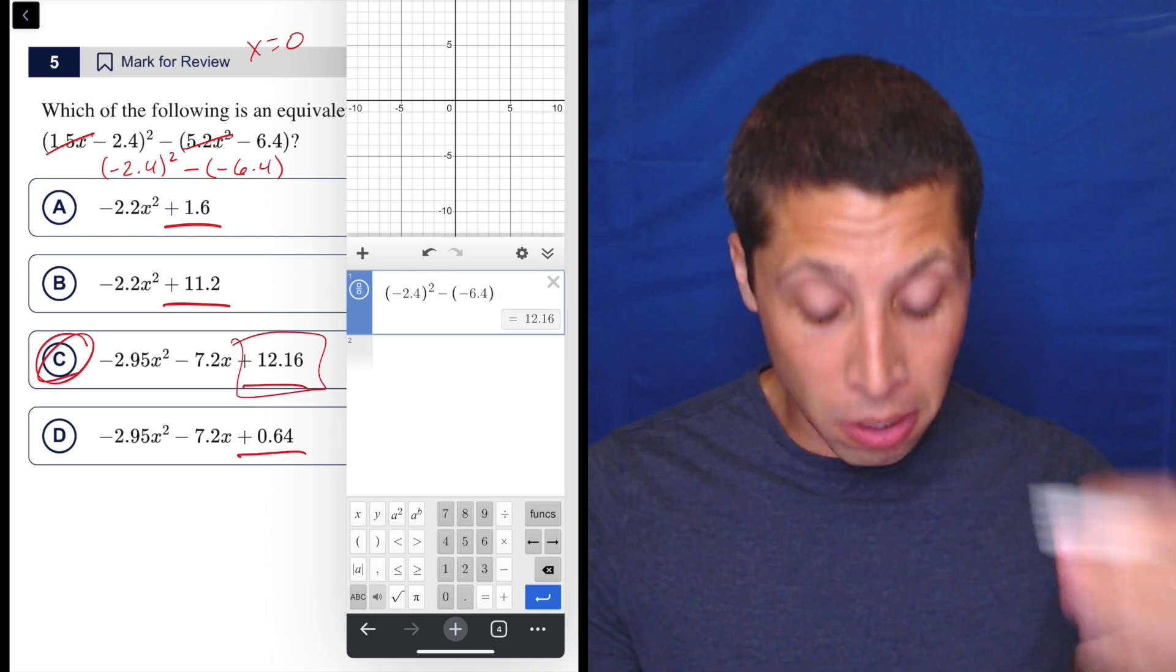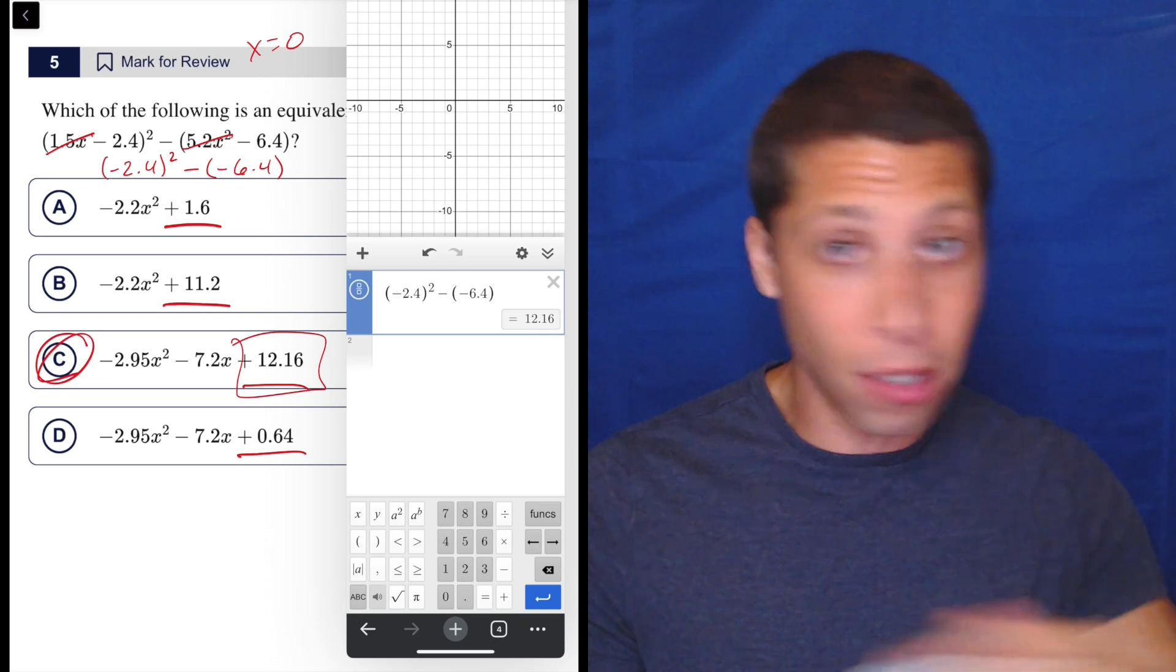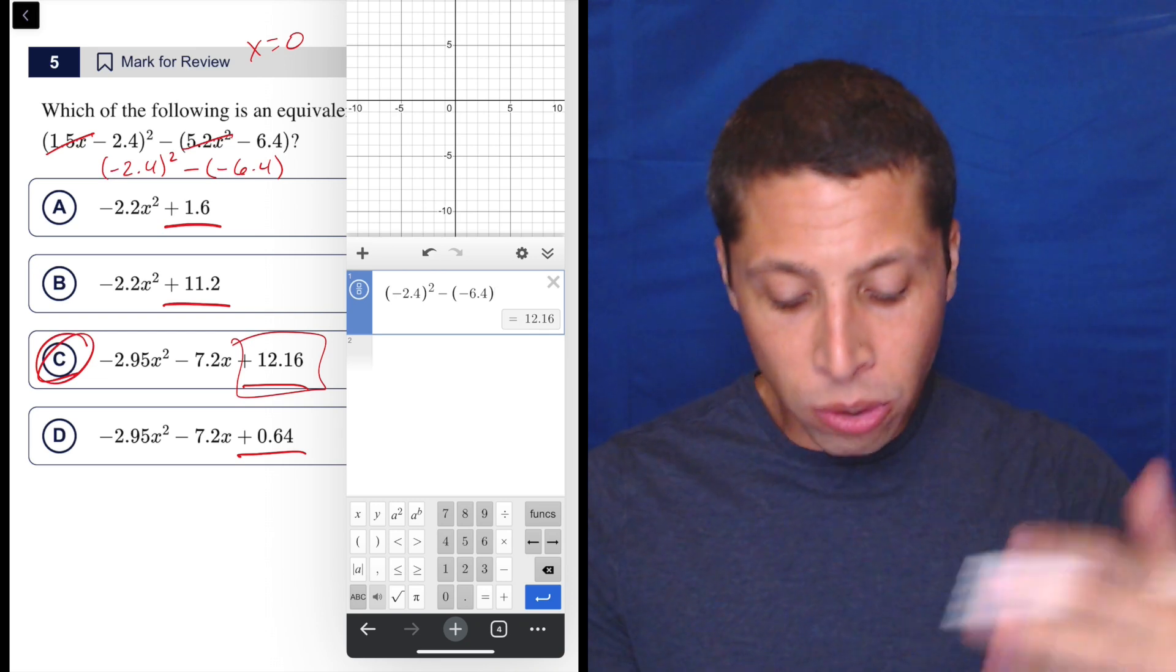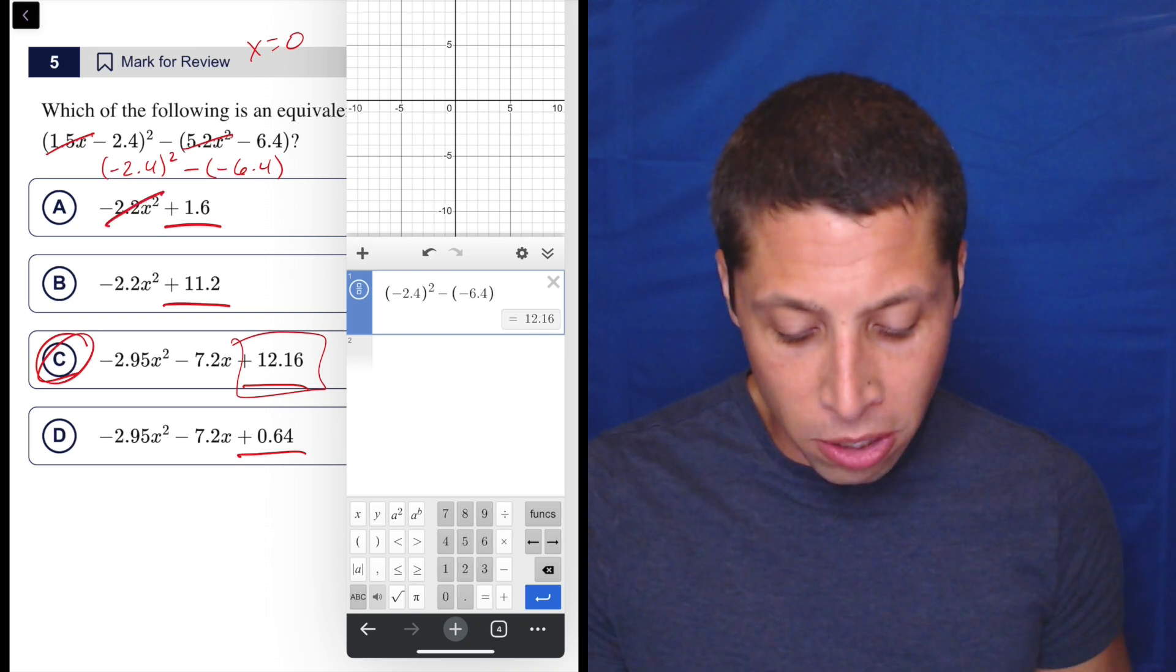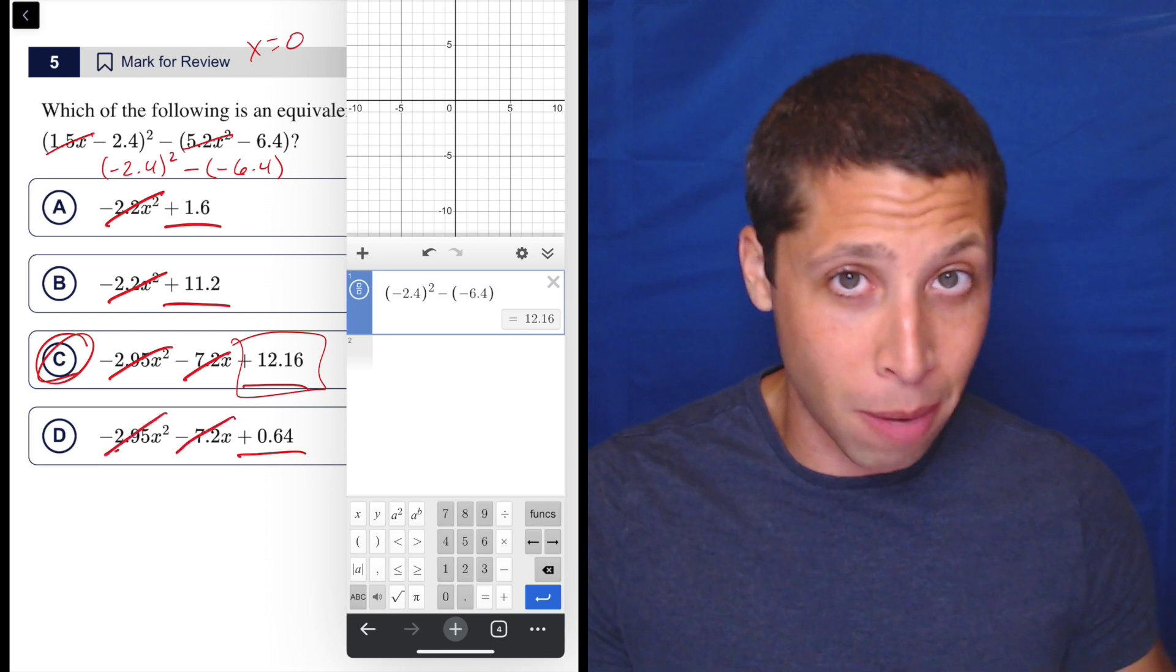Because again, if I were to put zero in for the x's in the answer choices as well, once I make x zero, all the x's are zero, those other x terms in the choices are going to die just like they did in the question. So I'm going to be left with just these last numbers.